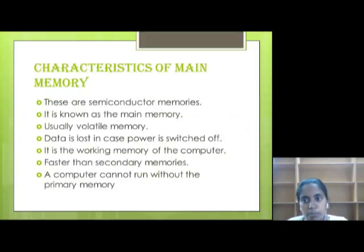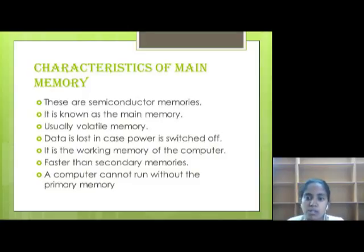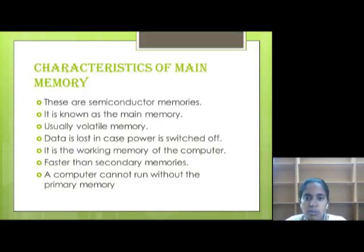Now we will discuss about the characteristics of main memory. These are semiconductor memories. It is known as the main memory of the computer. It is volatile in nature — if you switch off the power, data is lost. When you work on the computer, you use working memory, that is primary memory. Primary memory is much faster because it contributes to recently opened files, so it is faster than secondary memory. A computer cannot run without primary memory.